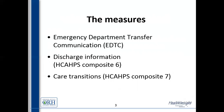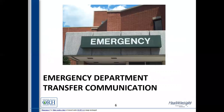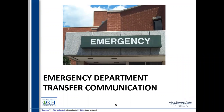The three measures we're going to look at are the Emergency Department Transfer Communication (EDTC) measure, Discharge Information — which is an HCAPS composite measure, Composite 6 — and Care Transitions, which is also an HCAPS composite, Composite 7. These measures fall under the heading of 'reducing admissions and improving care transitions' in the MBQIP quality guide. The first and the one we'll spend the most time on is the Emergency Department Transfer Communication measure.